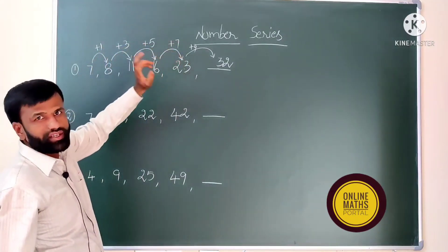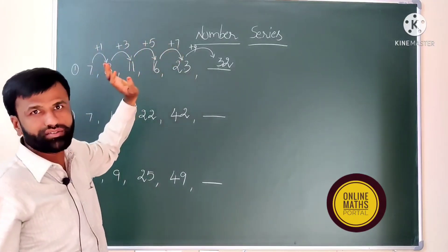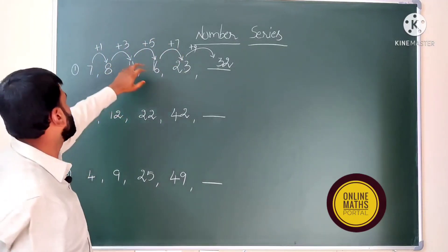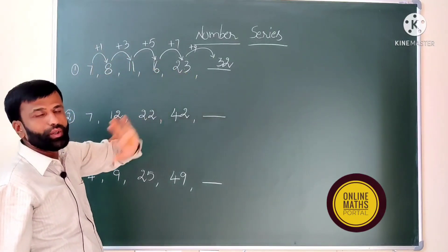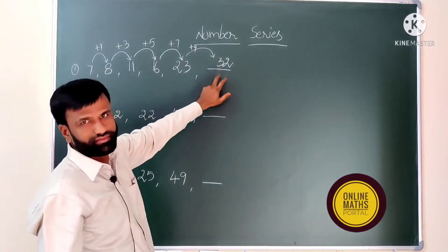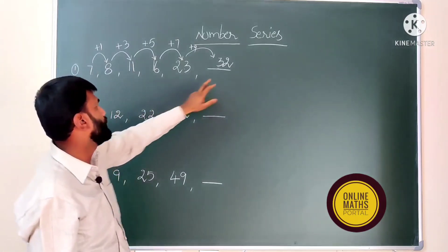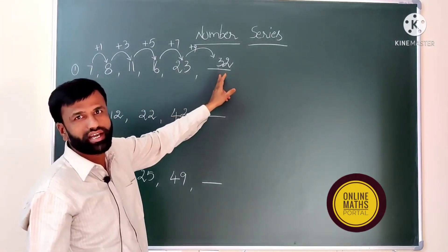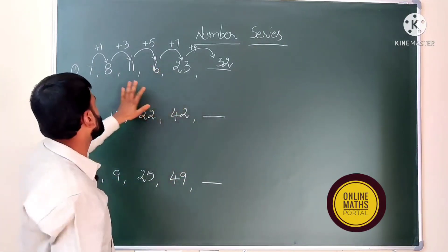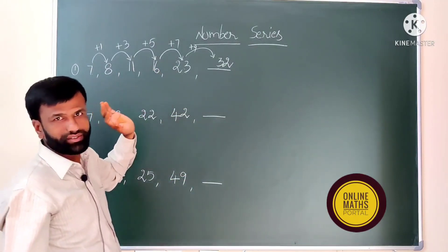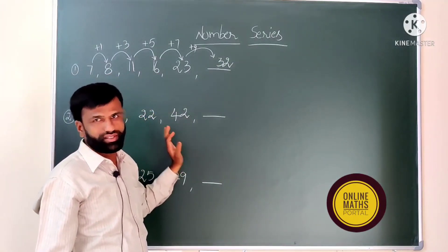So here in addition we can have odd numbers, natural numbers, even numbers, numbers with squares, and so on. Number series is practically easy, and we will quickly find out the logic. Now, what is the second question?